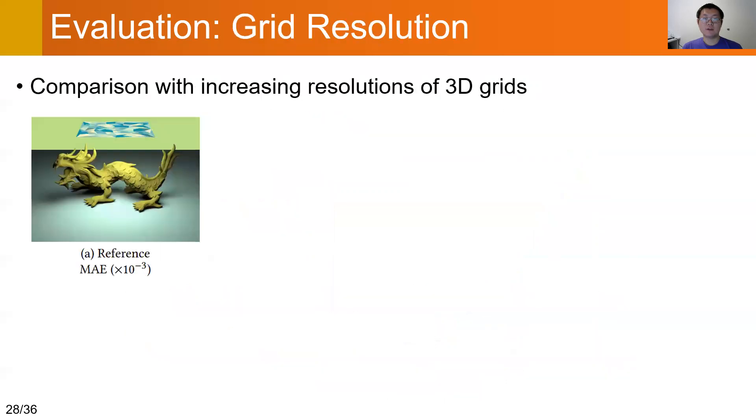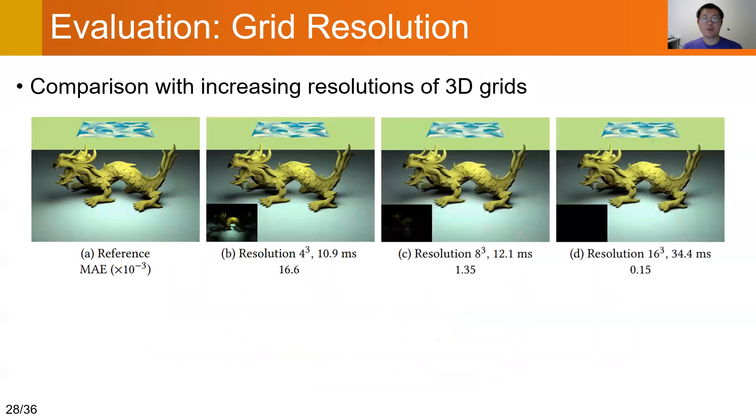In this experiment, we compare the rendering performance and accuracy with increasing grid resolutions. We find that using a resolution of 8 cubed provides good accuracy and small computational costs in most examples.